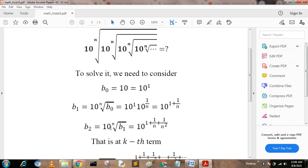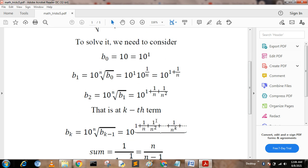b₂ = 10 times the nth root of b₁, which equals 10^(1+1/n+1/n²). Proceeding in this way, the kth term becomes bₖ = 10 times the nth root of bₖ₋₁.